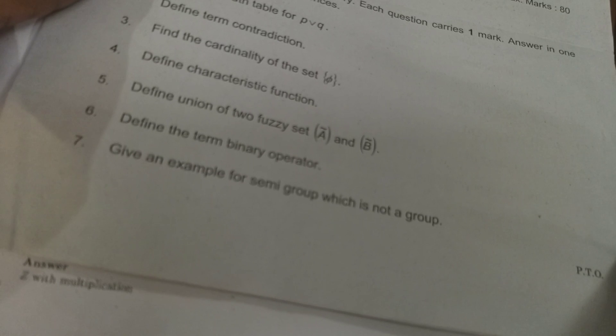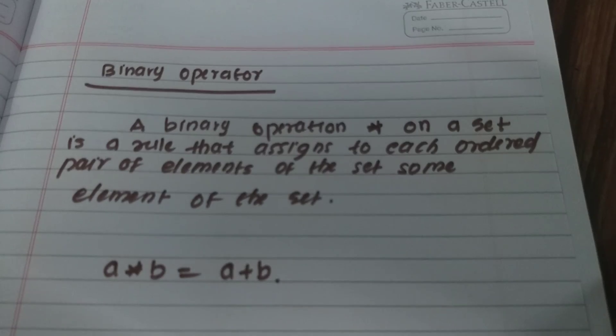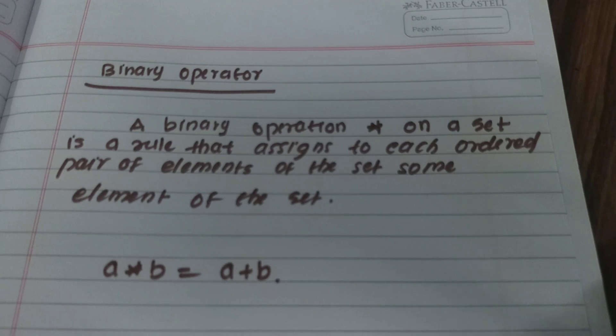The next question is to define the term binary operator. A binary operator is a rule that assigns to each ordered pair of elements of a set a unique element. For example, a star b equals a plus b.